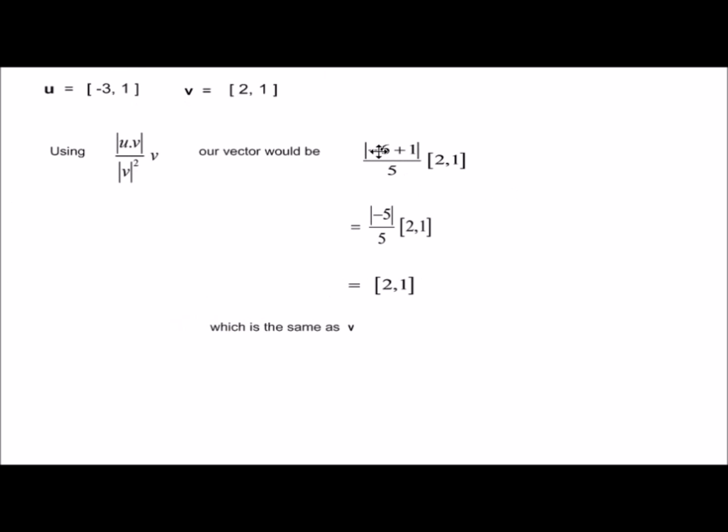So in this calculation using the first formula, negative 6 plus 1 in the modulus becomes negative 5, becomes positive 5 on 5, which is 1 times [2,1]. Same as v, not the opposite direction.